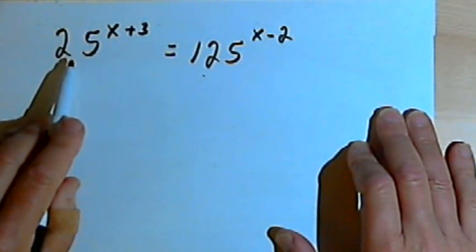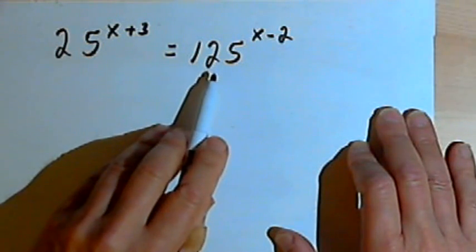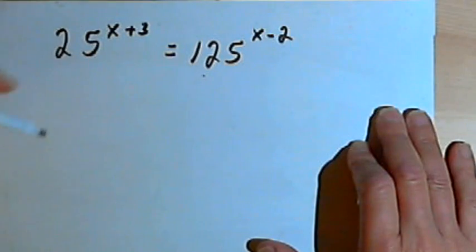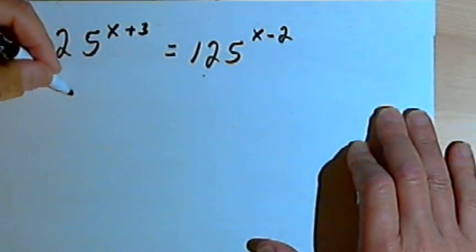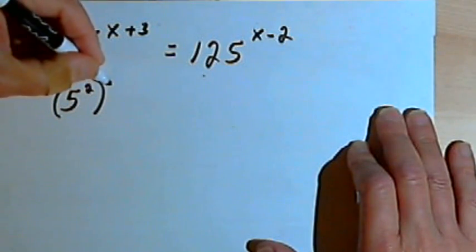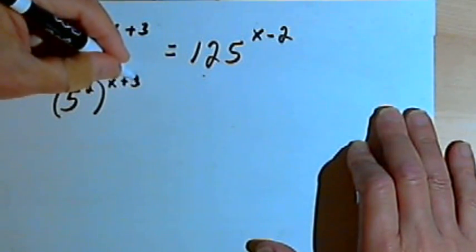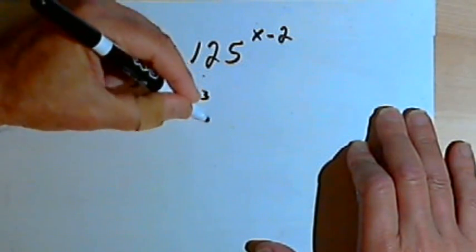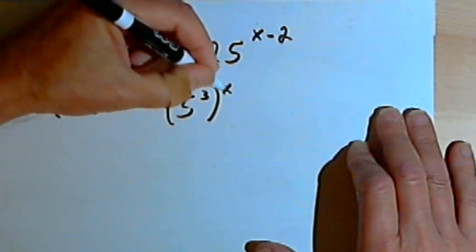Well, 25 is 5 squared, and 125 is 5 to the 3rd power. So 5 would be the common base. I'll rewrite both of these. I'll have 5 squared to the x plus 3. That's going to equal 5 to the 3rd to the x minus 2.